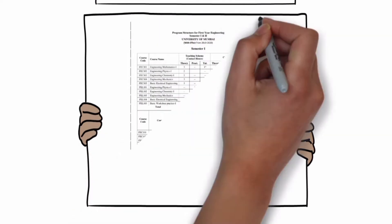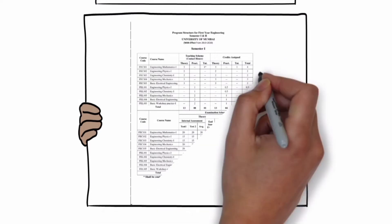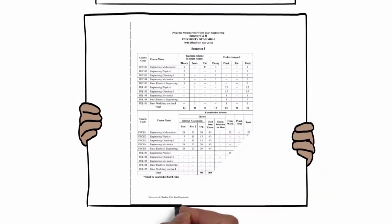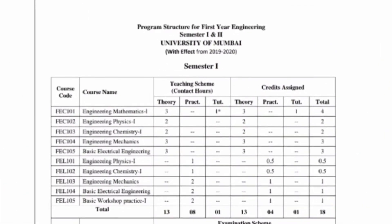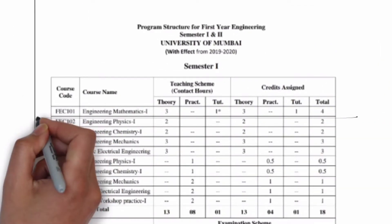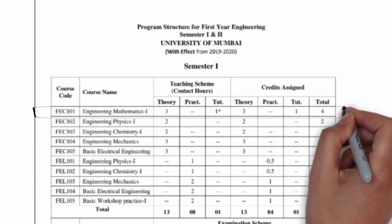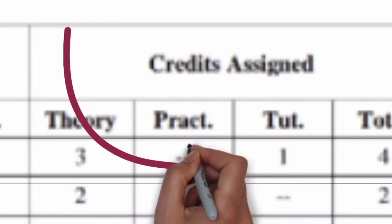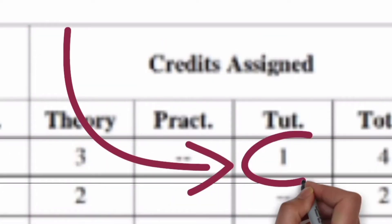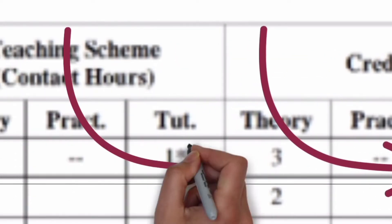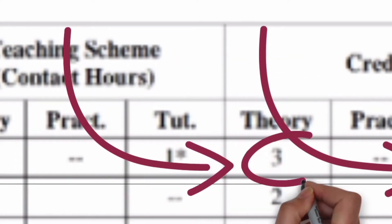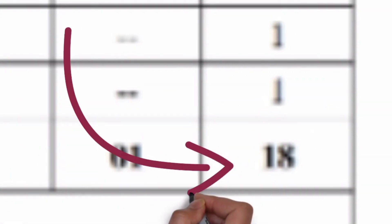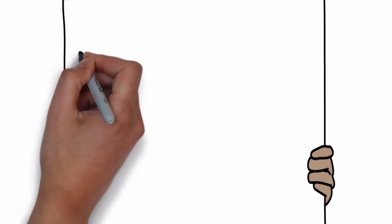first semester. You can get this PDF from the official site of your university. For Mumbai University students we are provided the drive link in the description, you can download it from there. Here if you can see, Engineering Mathematics is assigned with one credit point for tutorials and three credit points for theory, that is the unit tests and the end semesters. The total credits assigned is 18. This we will require while calculating the overall pointer. Now based